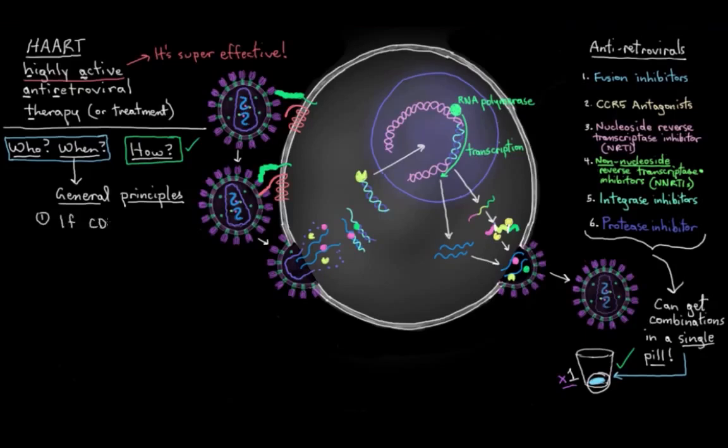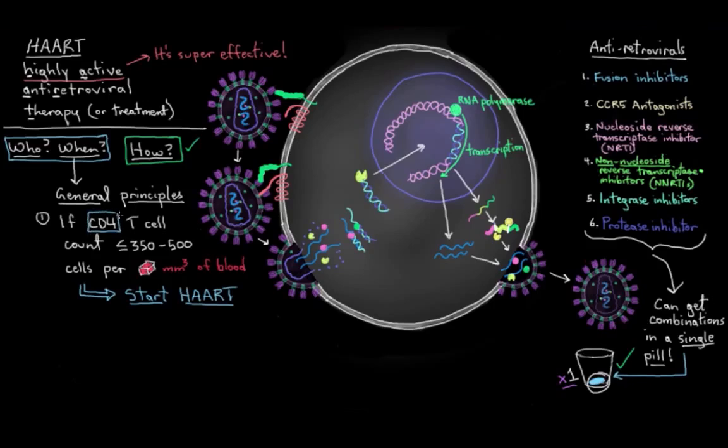For one, we know that if your CD4 T cell count is less than about 350 to 500 cells per cubic millimeter of blood, then it's time to start HAART. Remember, CD4 count is sort of used as a marker for how far along the illness is, right? The lower the CD4 count, the more damaged the immune system is. Viral load is important too. If the amount of HIV in your bloodstream is higher than 100,000 copies per milliliter of blood, it's time to start HAART.